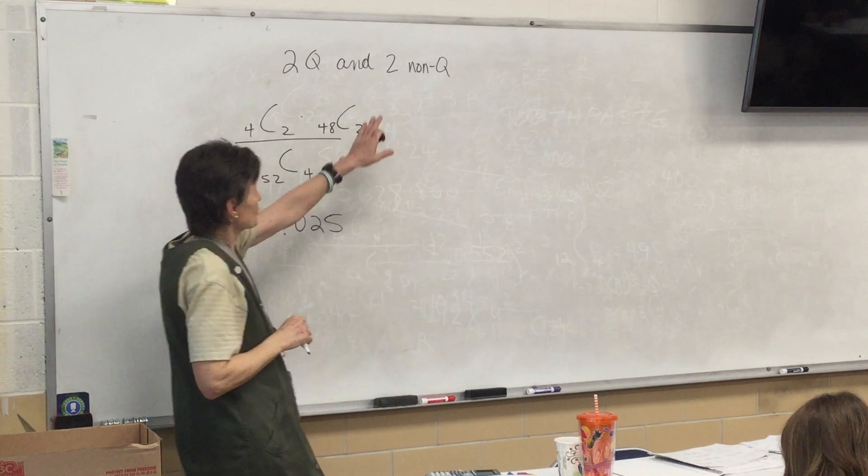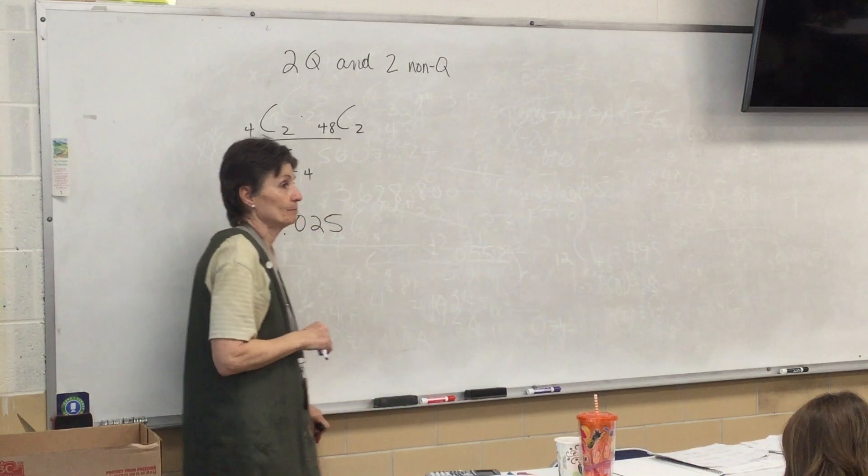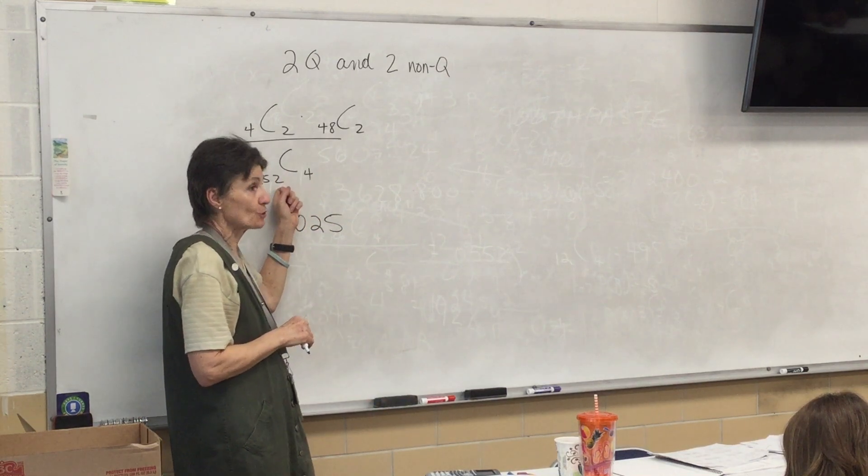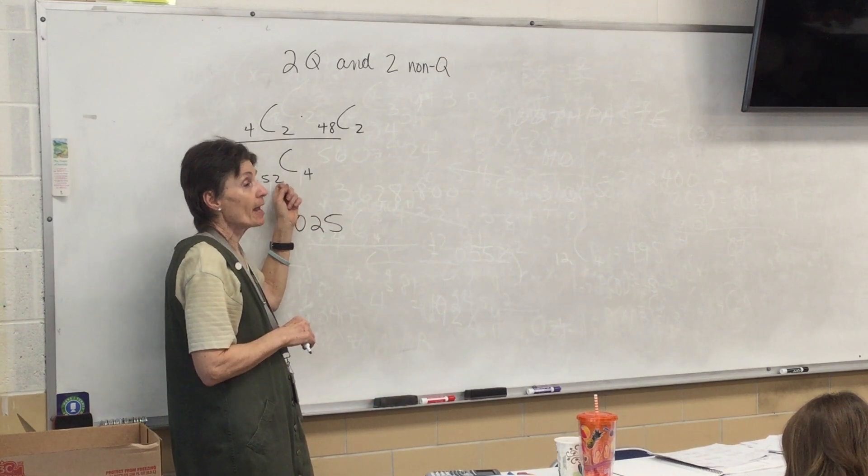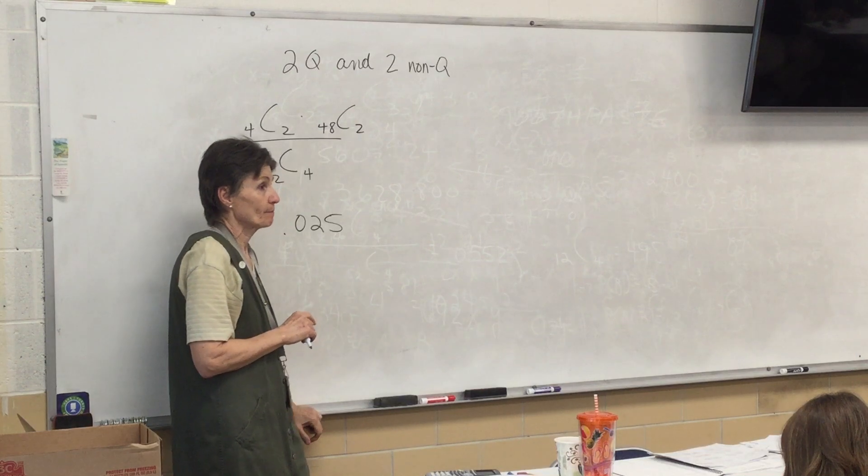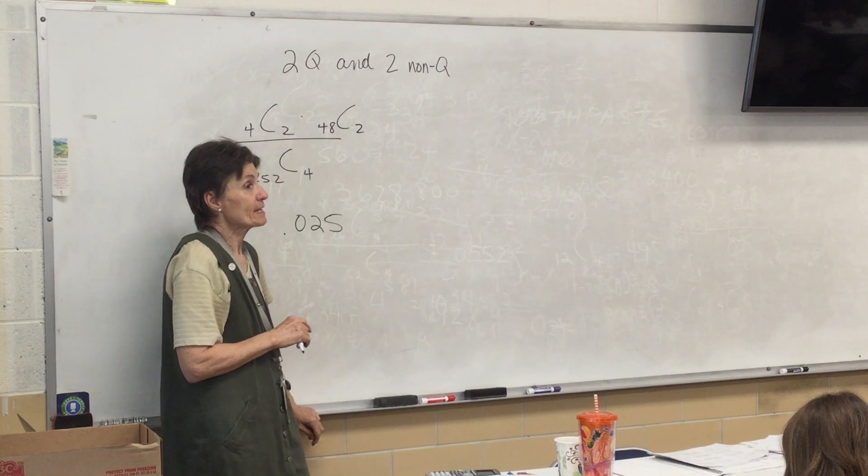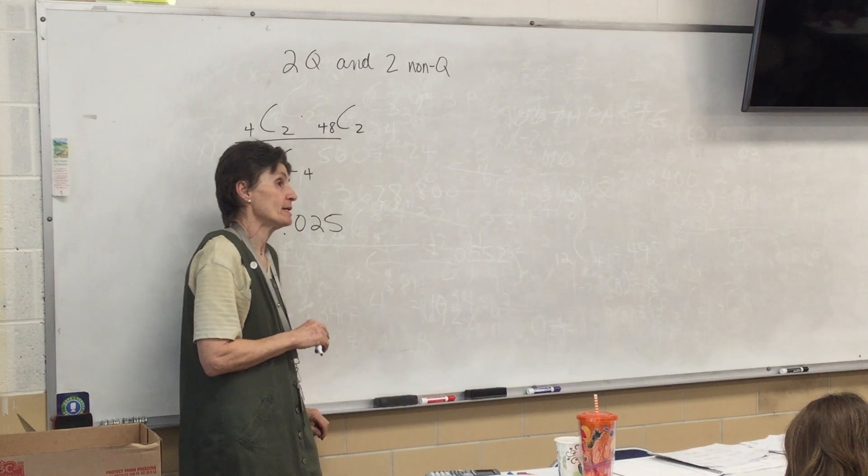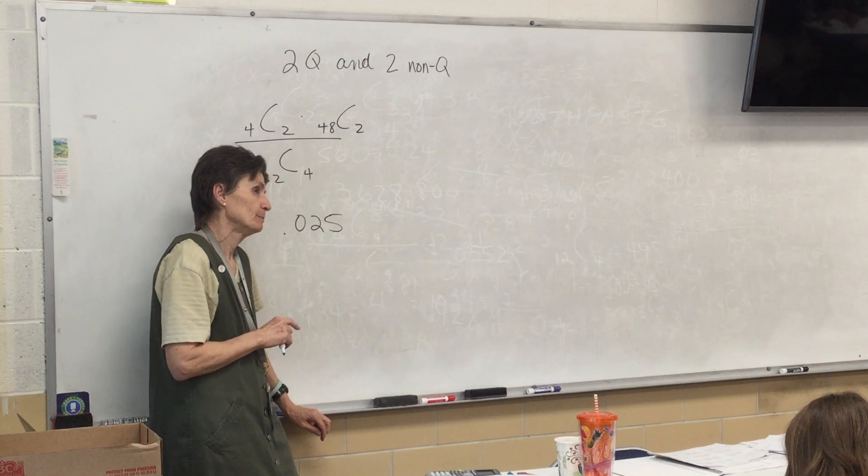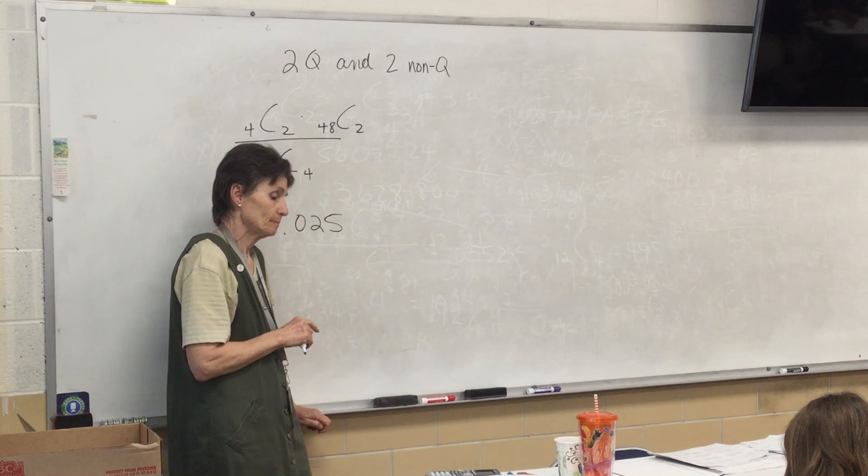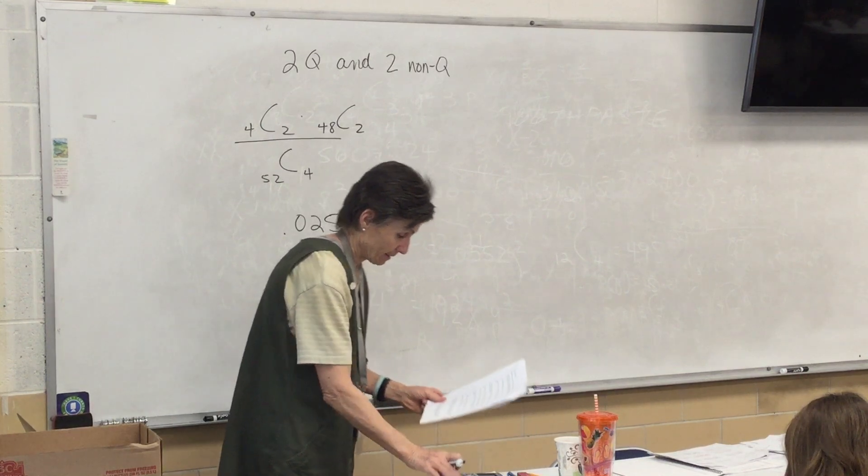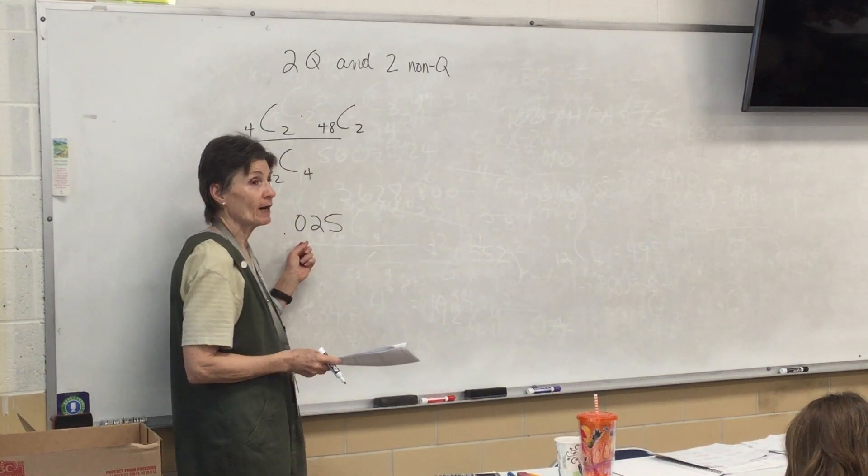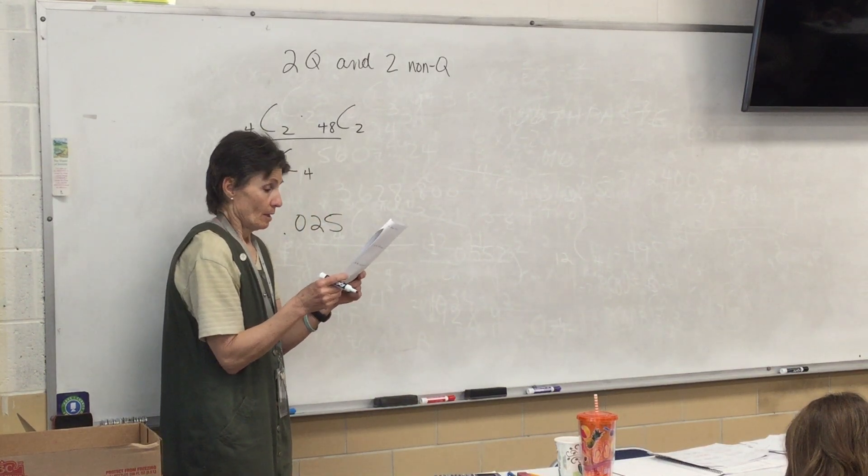I have to pick 2 cards that aren't Queens. There are 52 total cards in the deck and 4 of them are Queens. So there are 48 cards that aren't Queens. And that's what I'm going to pick from. Okay? Alright, everybody get .025?